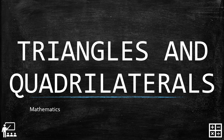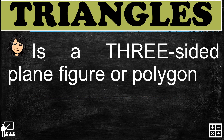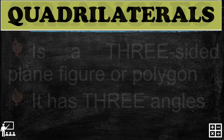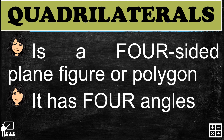This video lesson is about triangles and quadrilaterals. A triangle is a three-sided plane figure or polygon and it has three angles. A quadrilateral is a four-sided plane figure or polygon and it has four angles. Next, I'm going to show you where the sides and angles are to represent the quadrilaterals and the triangles.